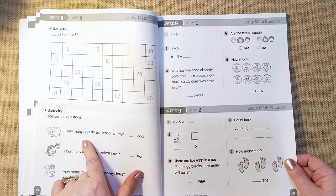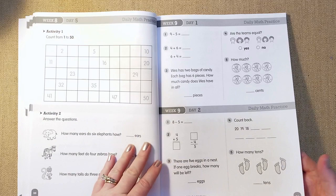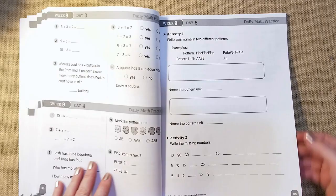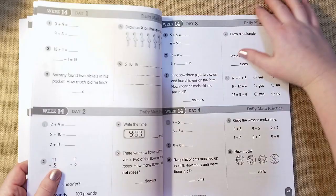And they have to fill in the chart. How many ears do six elephants have? So all these questions here. And so this is week nine. And then day five, you can see there is a bigger activity on like a full sheet.